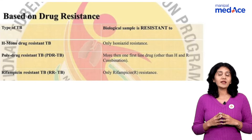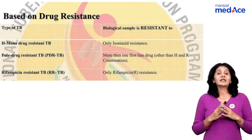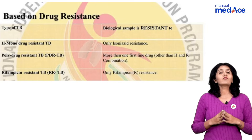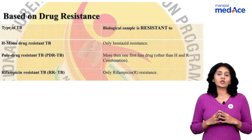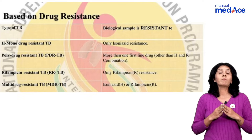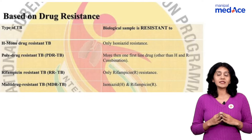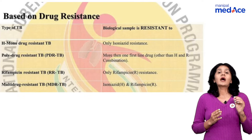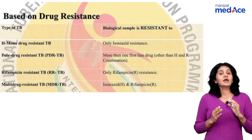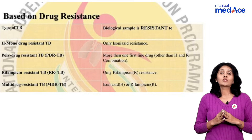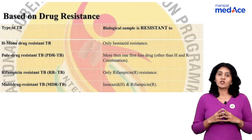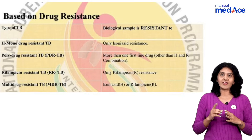What is RR? It is rifampicin resistance — resistance to rifampicin with or without resistance to other anti-tubercular drugs. What is MDR? Multidrug resistance. Here we see resistance to at least isoniazid plus rifampicin. Remember, it is not isoniazid or rifampicin — it is isoniazid plus rifampicin.